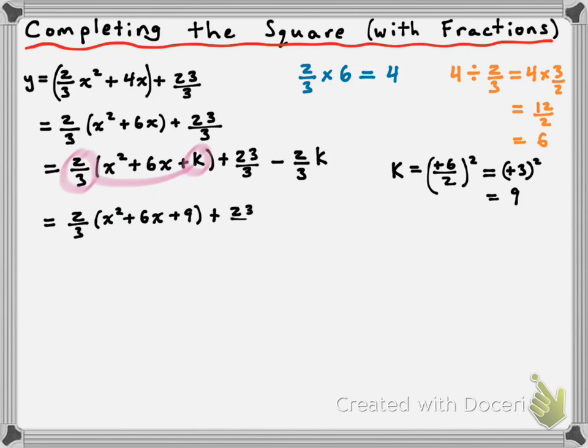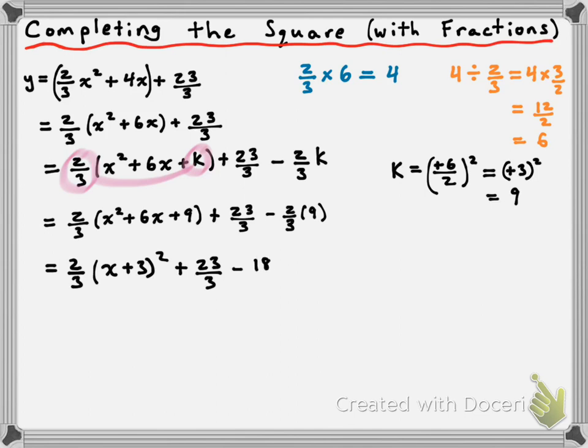That gives us 2 thirds times x squared plus 6x plus 9, plus 23 over 3, minus 2 over 3 times 9. Since the bracketed stuff is now a perfect square trinomial, we can factor x squared plus 6x plus 9 as x plus 3 squared. Then negative 2 over 3 times 9 gives us negative 18 over 3.